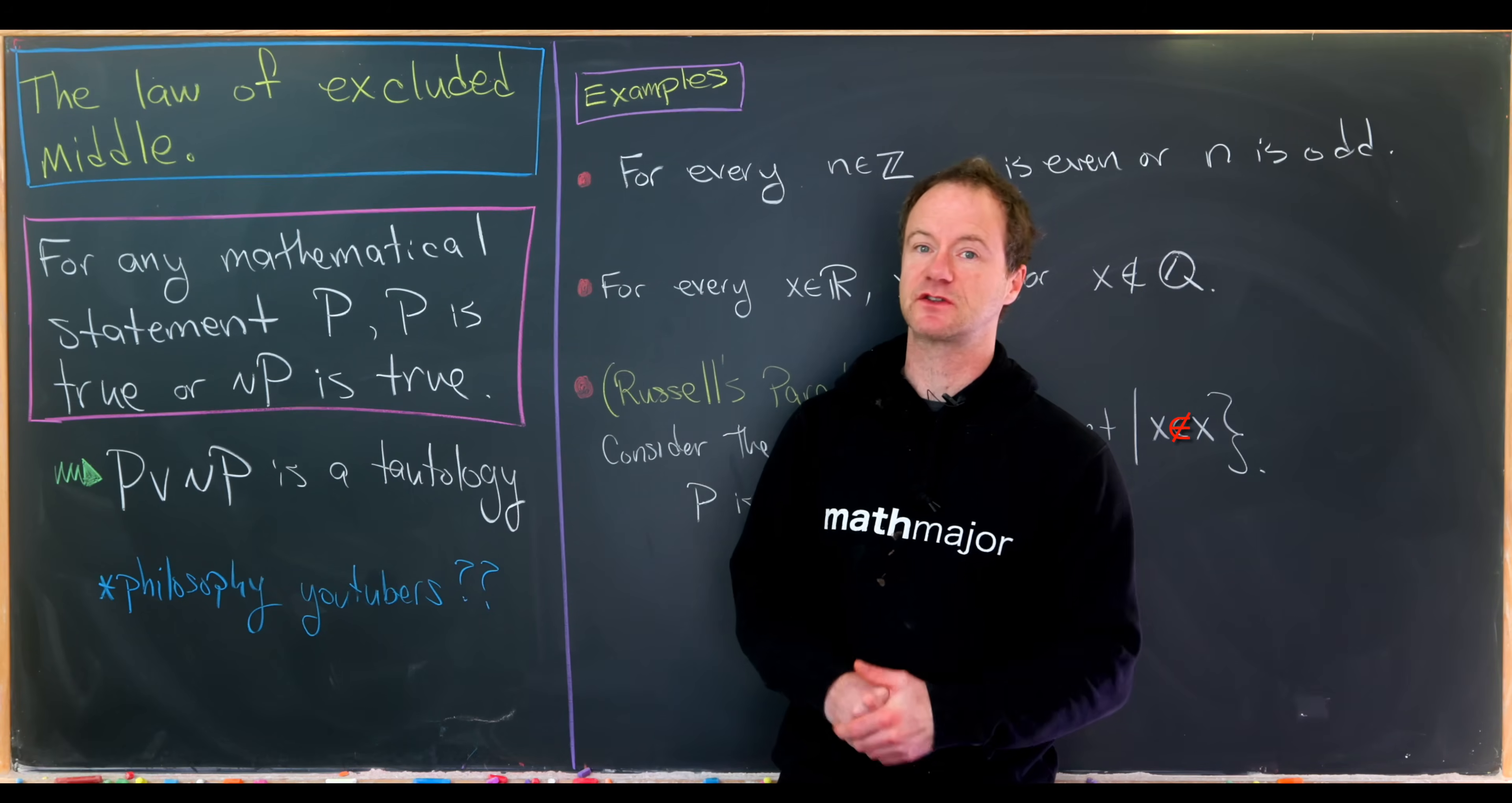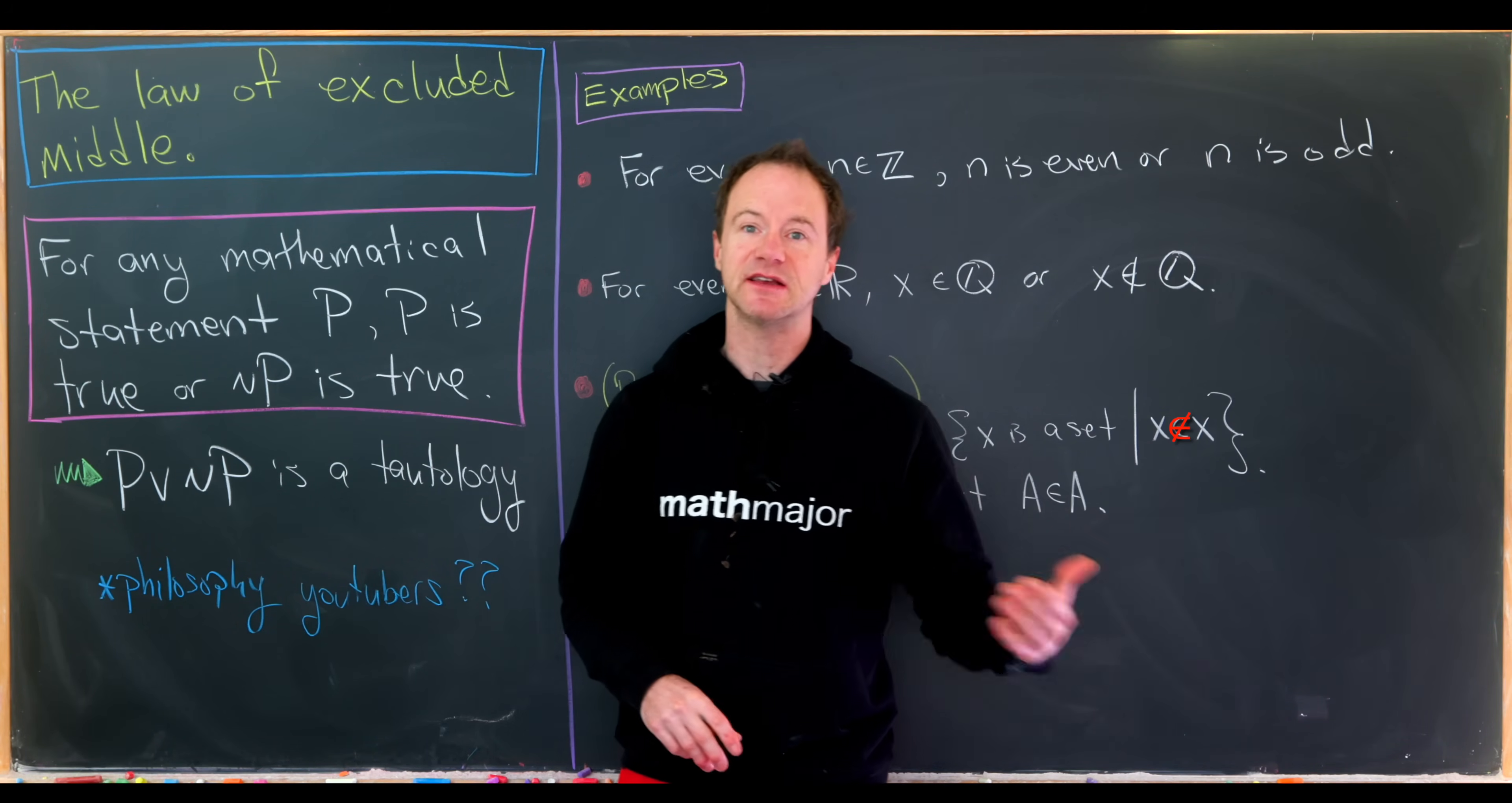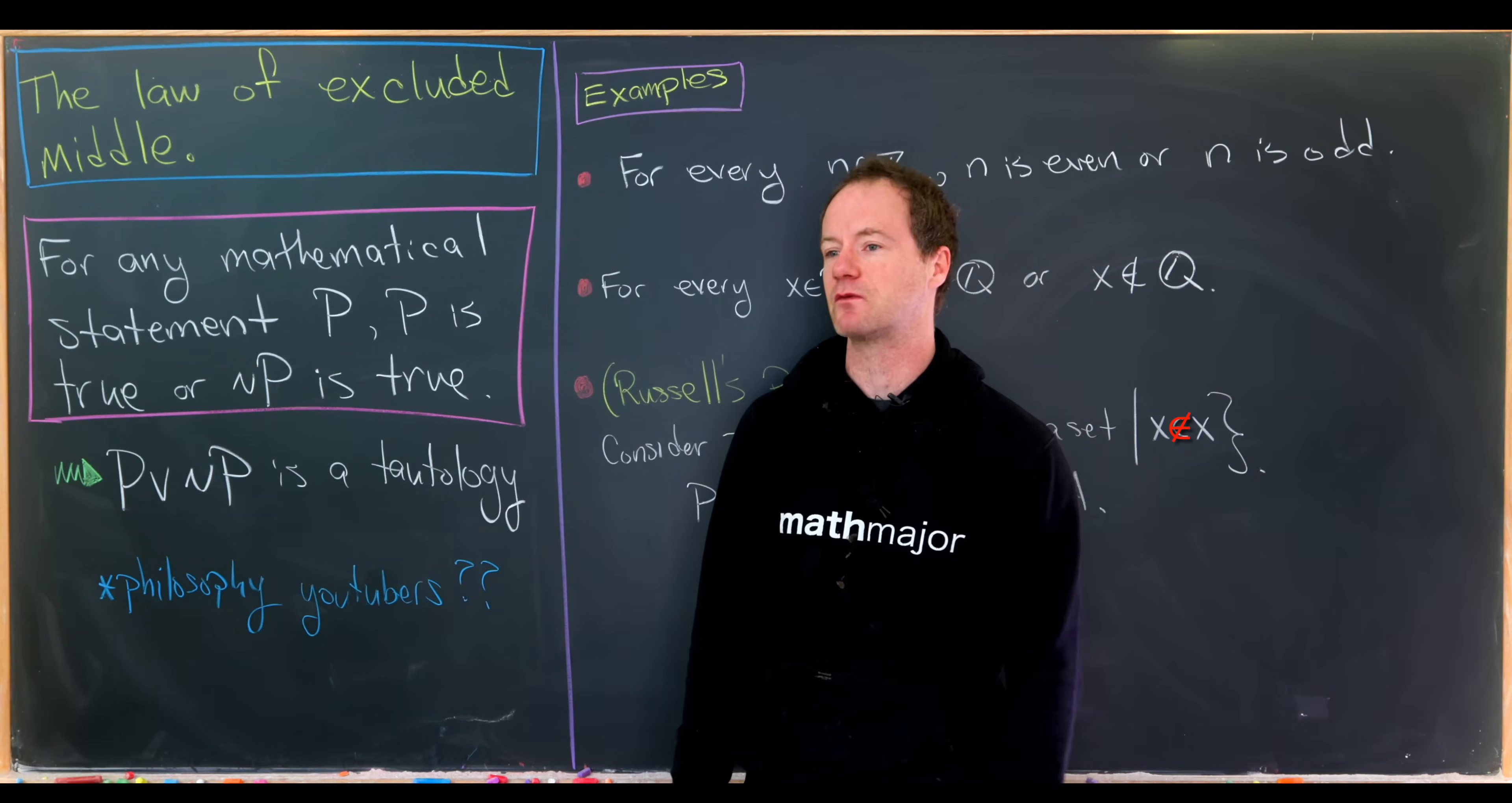So let's see what this law of excluded middle is. It says for any mathematical statement P, P is true or not P is true. So if not P is true, then P is false. In other words, for any mathematical statement P, P is either true or false. The statement P or not P is a tautology, a statement that is always true. If P is true, we have true or false. But if P is false, we have false or true. That gives us a true statement regardless.